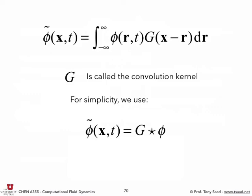The standard filter on an LES grid is the box filter — essentially whatever goes through your grid. For simplicity, we write a filtered quantity using the convolution symbol (star) rather than the full integral. So phi-tilde equals G convolved with phi, which is equivalent to that integral.